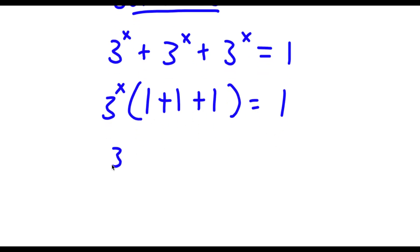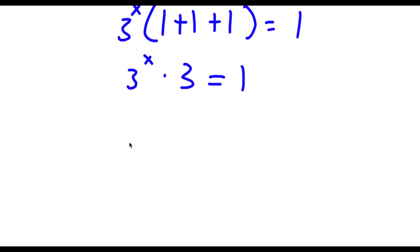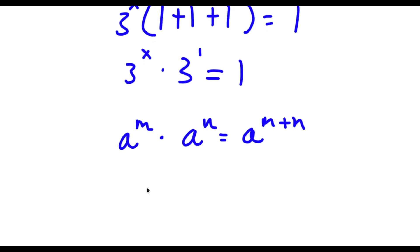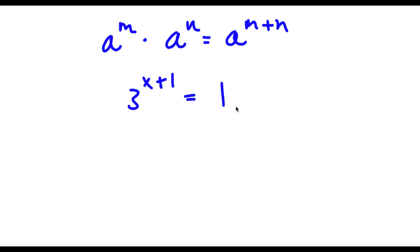Simplifying what's in the parentheses gives 3 to the power of x times 3 equals 1. Now using the rule a to the power of m times a to the power of n equals a to the power of m plus n, I can write 3 as 3 to the power of 1. So 3 to the power of x times 3 to the power of 1 equals 3 to the power of x plus 1, which equals 1. Since anything to the power of 0 equals 1, I rewrite 1 as 3 to the power of 0, giving 3 to the power of x plus 1 equals 3 to the power of 0.